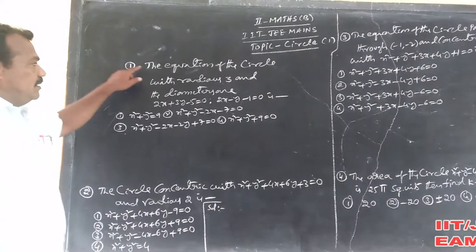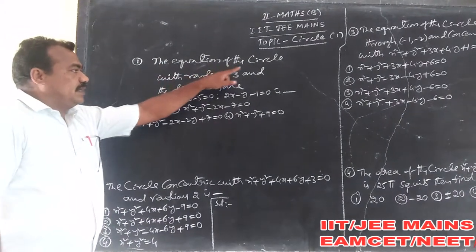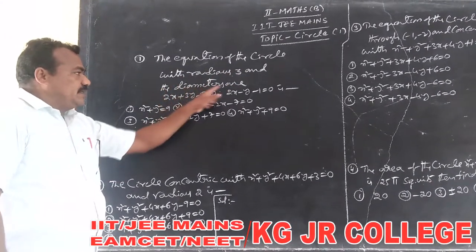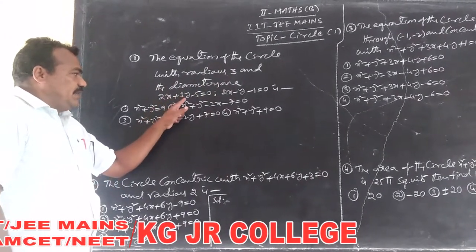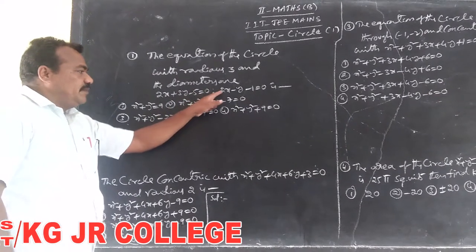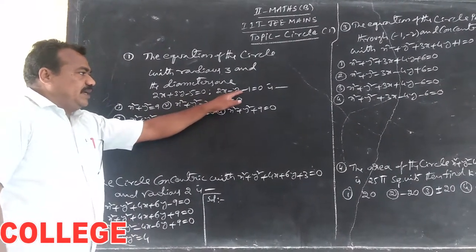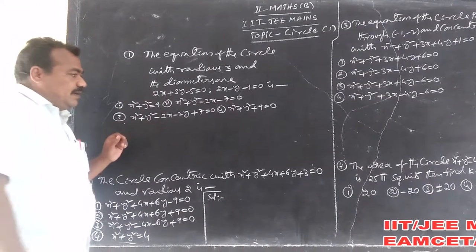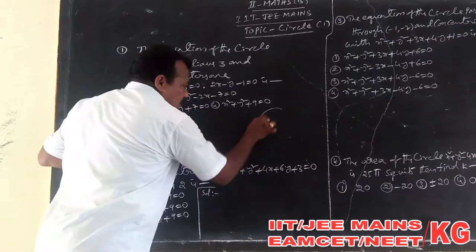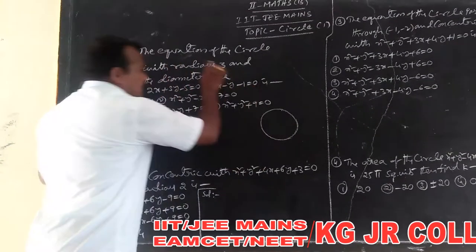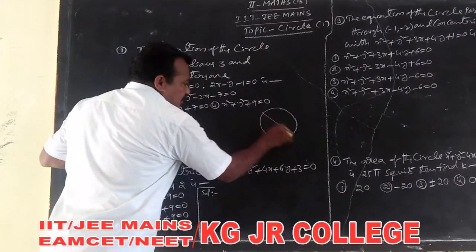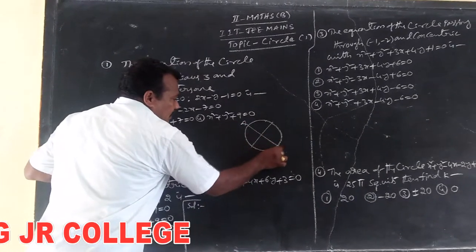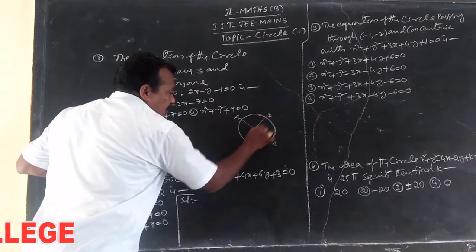The first one is the equation of the circle with radius 3 and the diameters are 2x plus 3y minus 5 is equal to 0, and 2x minus 5y minus 1 is equal to 0. Then the circle equations — here are the center of the circle, the radius, and the diameters. The point of intersection of the diameters is the center of the circle.